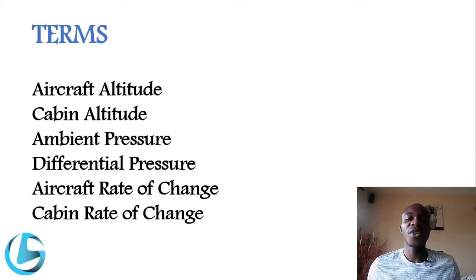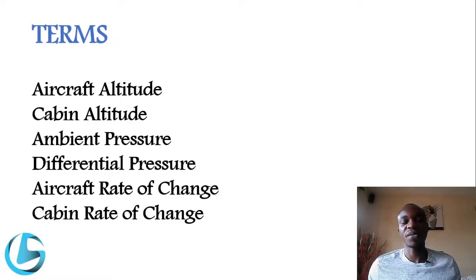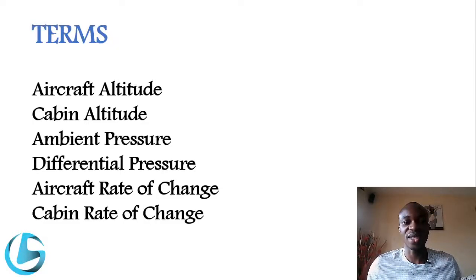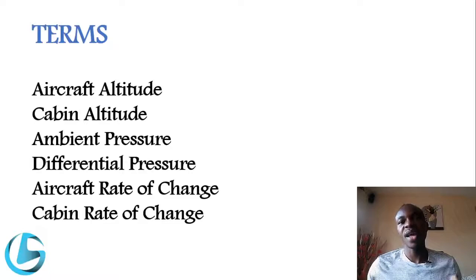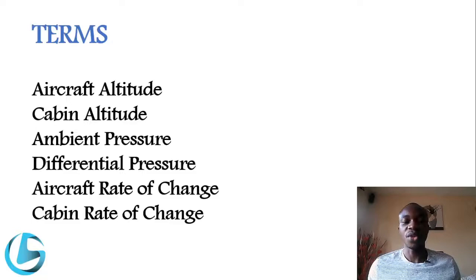Ambient pressure is the immediate pressure surrounding the aircraft — the air pressure surrounding the area at the particular altitude where the aircraft is flying. Differential pressure is the pressure difference between the aircraft cabin and the ambient pressure outside the aircraft.